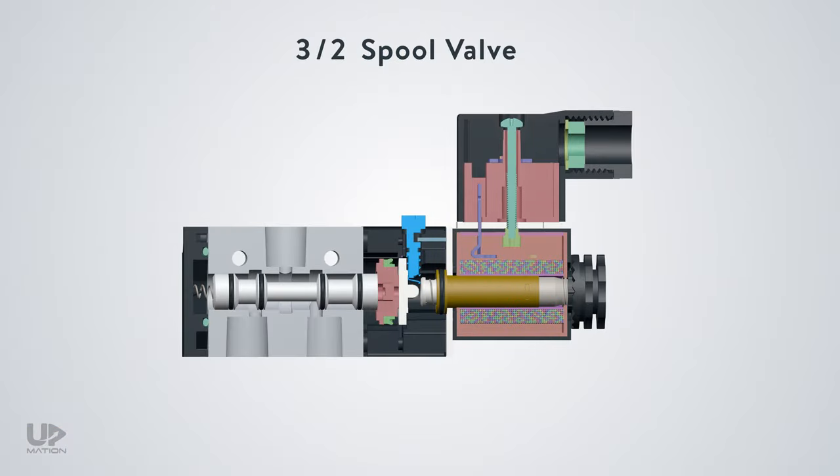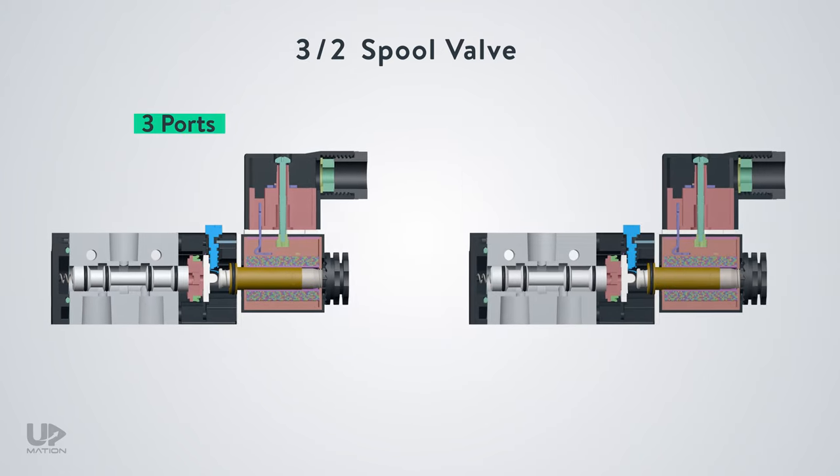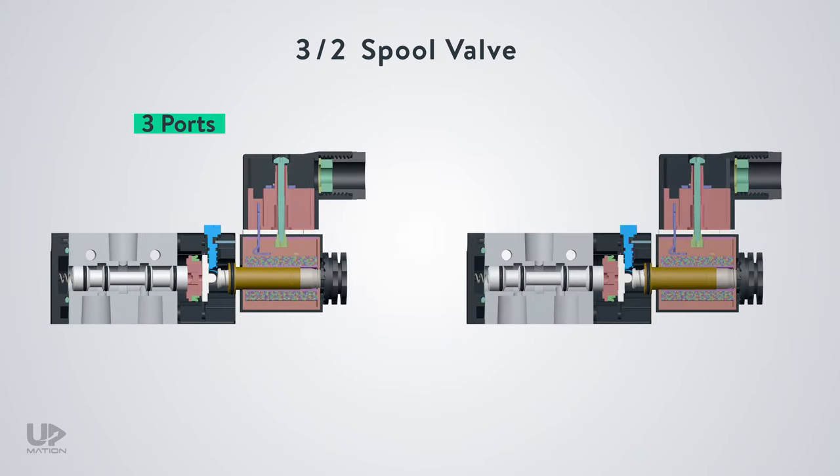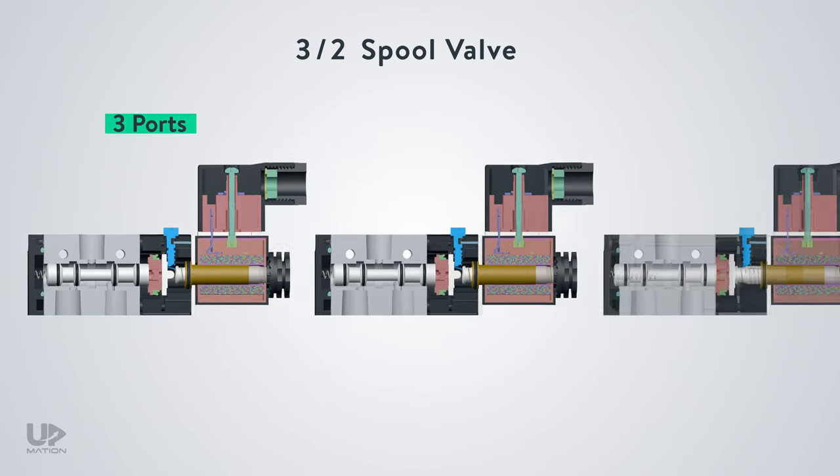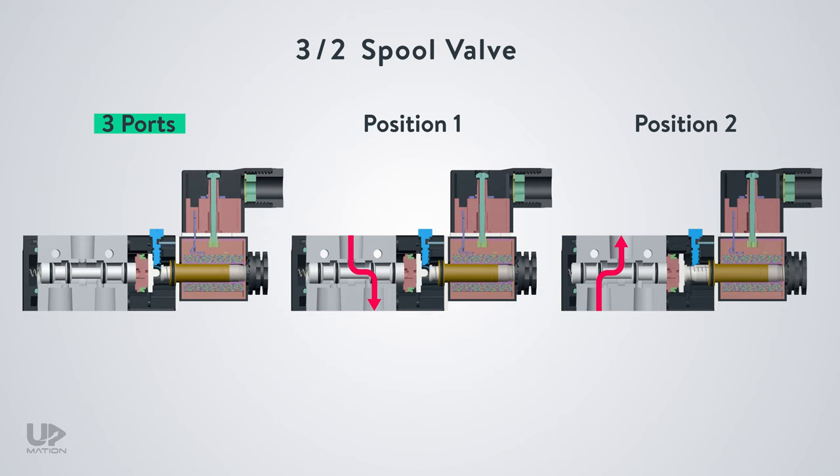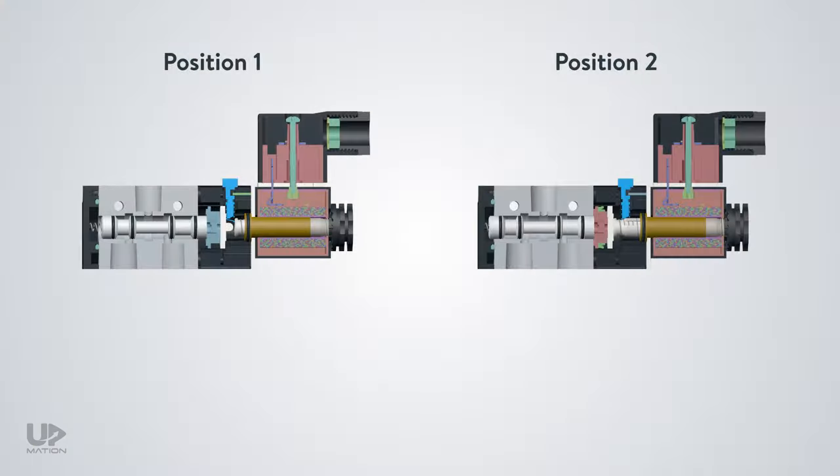We should see how many ports or ways the valve has. Here, there are 3 ports, right? That's why the first digit is 3. Second of all, we should specify how many positions the spool can take within the valve. Or, in other words, how many flow paths this valve has. The answer will define the second digit. As you see, this valve has two positions.